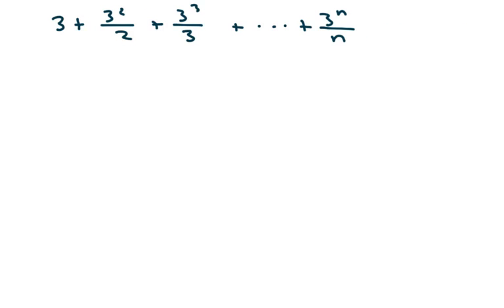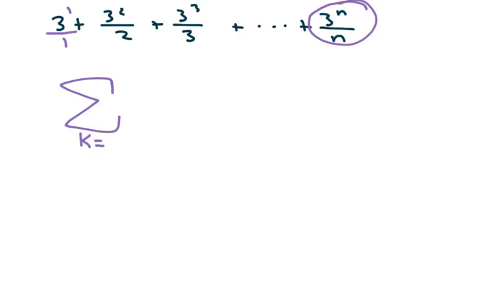The next one — again I'm looking at this last number. I'm going to do my summation notation starting with k equals 1. Because I can write the first term as 1 over 1, I can see the pattern better. We start with 1 and end at n, and I just write this down with k — so this is 3 to the k over k.